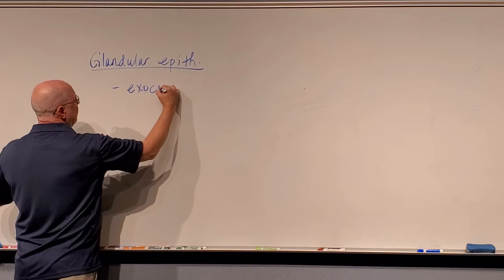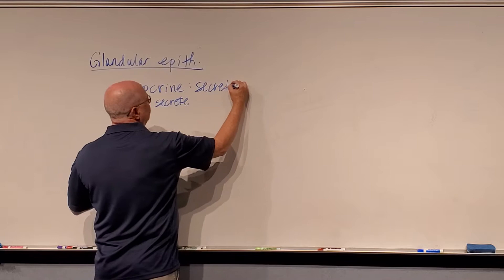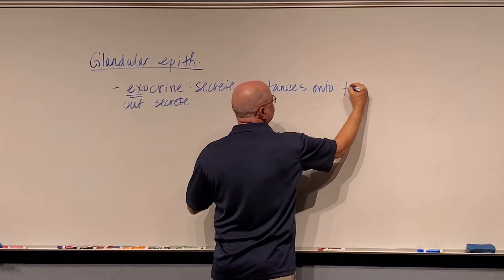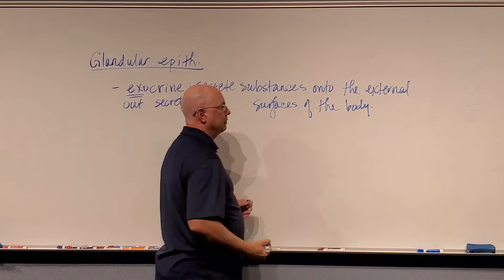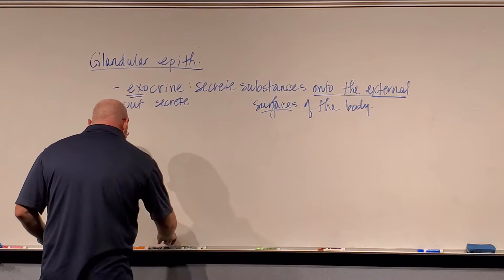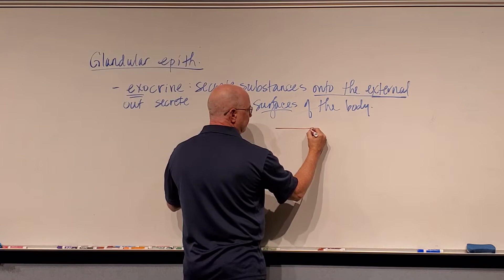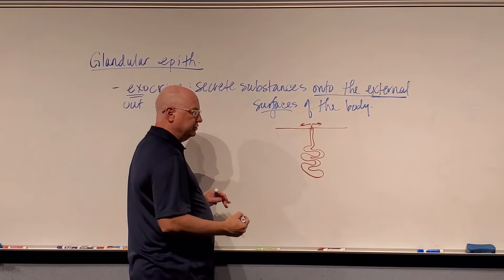There are two different types of glands. One is called an exocrine gland. Exo means outside and crin means secrete. So exocrine glands secrete substances onto the external surfaces of the body. Their secretions exit the body. So if I were looking at the human body, there's a little opening that runs down into a tube that gets all coiled up, and the secretions from the cells lining this tube go onto the external surfaces. That would be an exocrine gland.